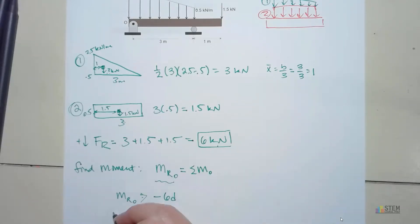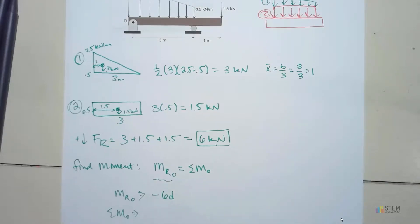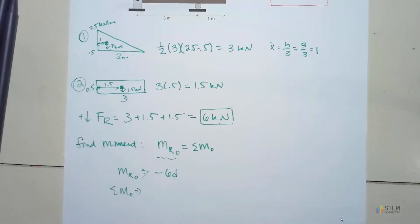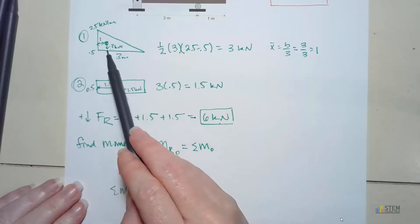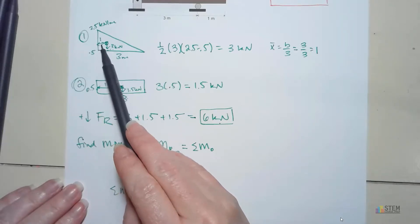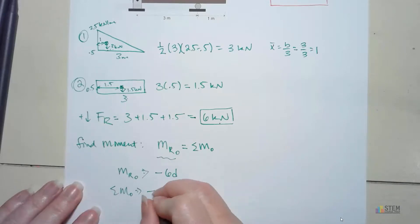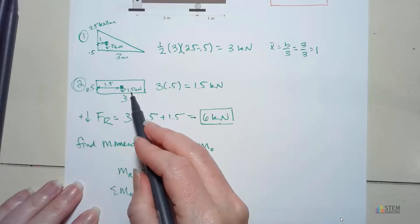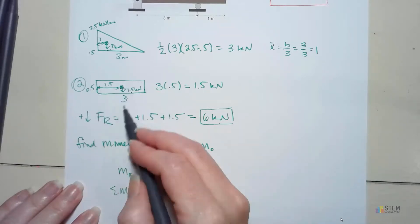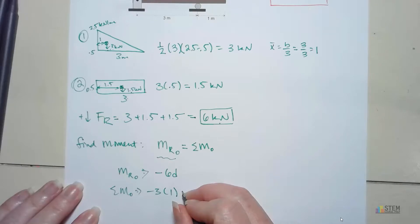Now let's go ahead and do the sum of the moments. Alright. For this one, let's start here. We've got this resultant force due to this triangular shape distributed load. That's at a distance of 1 from O. This is to the right of point O, so it's going to be negative. So it'll be negative 3 times 1. So we have that. Then we've got this one. That's at a distance of 1.5. It's also going to be negative since it's to the right of point O. So we'll have negative 1.5 times 1.5.